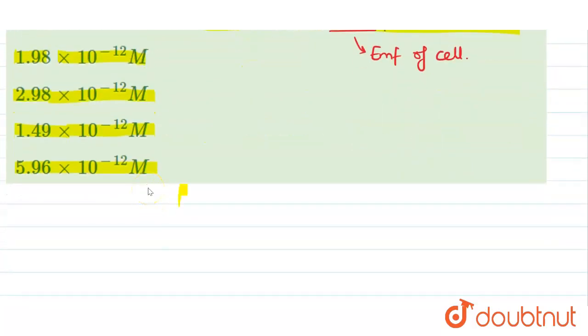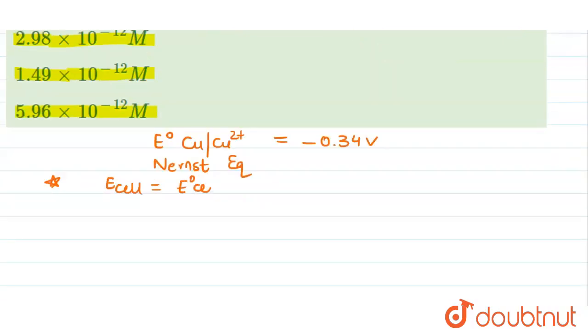So we have been given E⁰ Cu to Cu2+ equal to minus 0.34 volts. How do we solve this question? We got one formula known as the Nernst equation: E cell is equal to E⁰ cell